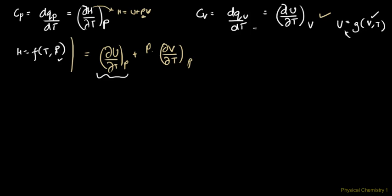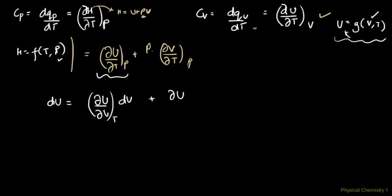The technique I'll apply is: since U is a function of V and T, a differential change in U can be brought about by changing V at constant temperature, or by a small change in temperature keeping volume constant. What I need is ∂U/∂T, so I'll divide the total differential expression by dT and apply the condition of constant pressure.